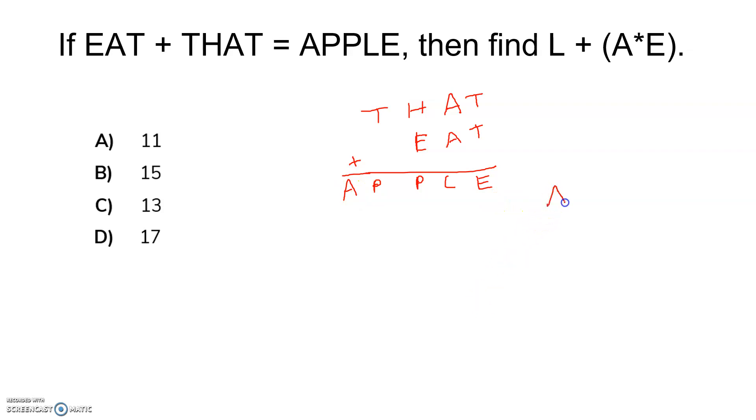So no doubt we can simply write A equals one, because the maximum carry possible is one after adding two unit digit numbers. And here T is there. T and P are not same, so obviously from the previous step one carry has come. So here one carry. So T plus one equals P. And after adding T and one, we are getting a two digit number.